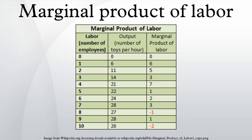Diminishing marginal returns differs from diminishing returns. Diminishing marginal returns means that the marginal product of the variable input is falling. Diminishing returns occur when the marginal product of the variable input is negative — that is, when a unit increase in the variable input causes total product to fall. At the point that diminishing returns begin, the MPL is zero.